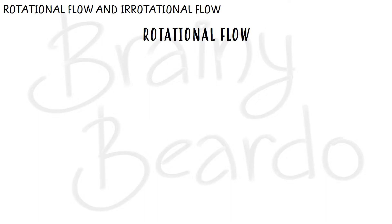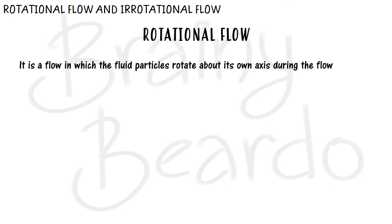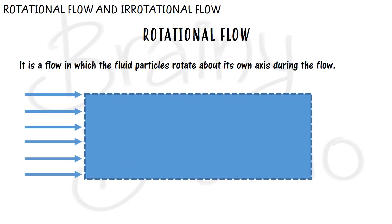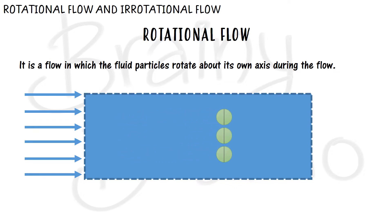First, let us understand the two types of flow based on rotation. The first one is called rotational flow. Rotational flow is defined as the flow in which the fluid particles rotate about their own axis during the flow. If we take three fluid particles flowing through a control volume and they rotate about their own axis, then such kind of flow is called rotational flow.